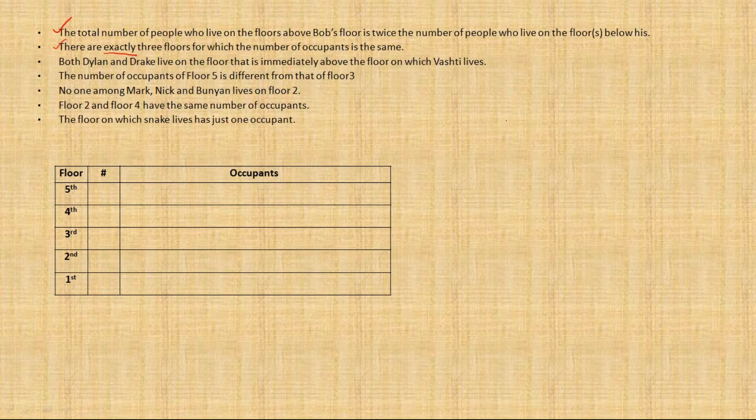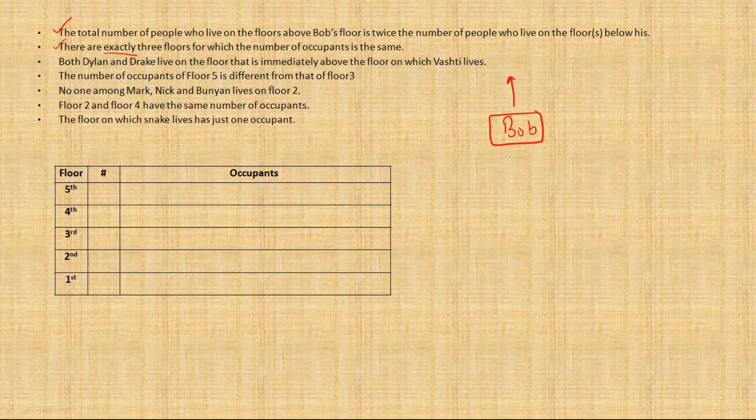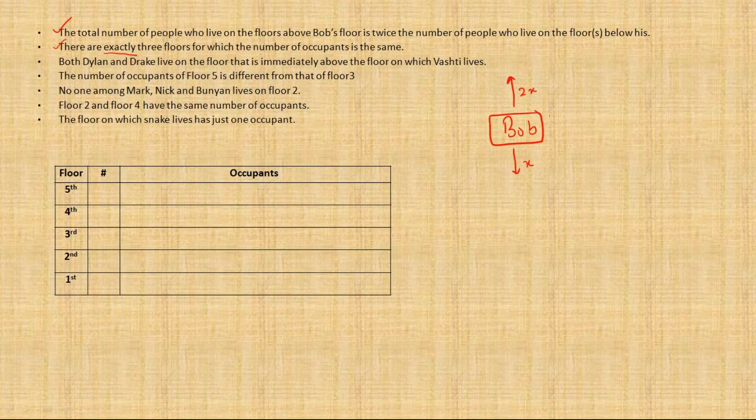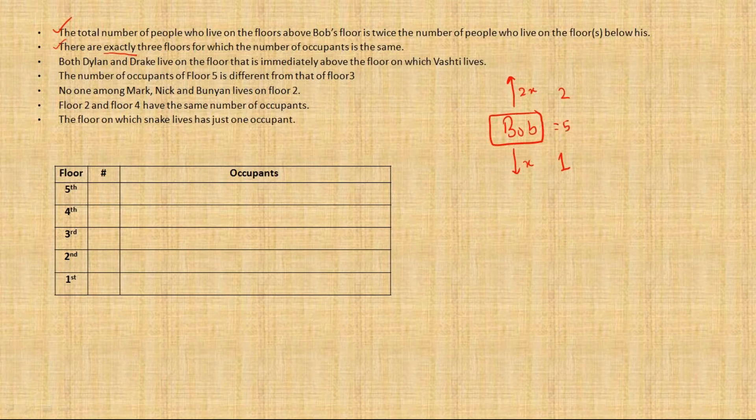So first thing is the floor on which Bob lives, and then there are floors above Bob's and below Bob's floors. So it says the number of people above Bob's floors is 2x and this is x. Now what these could be? Could they be 2 and 1? No, because in that case Bob's floor will have to have 5 people.